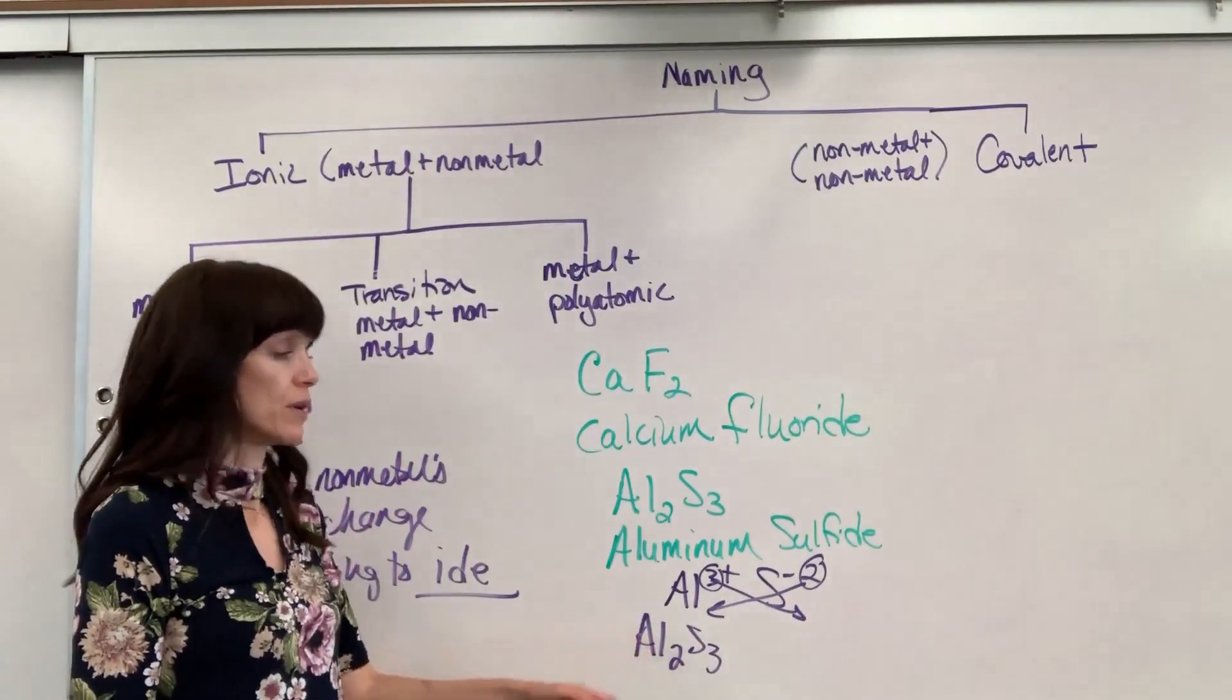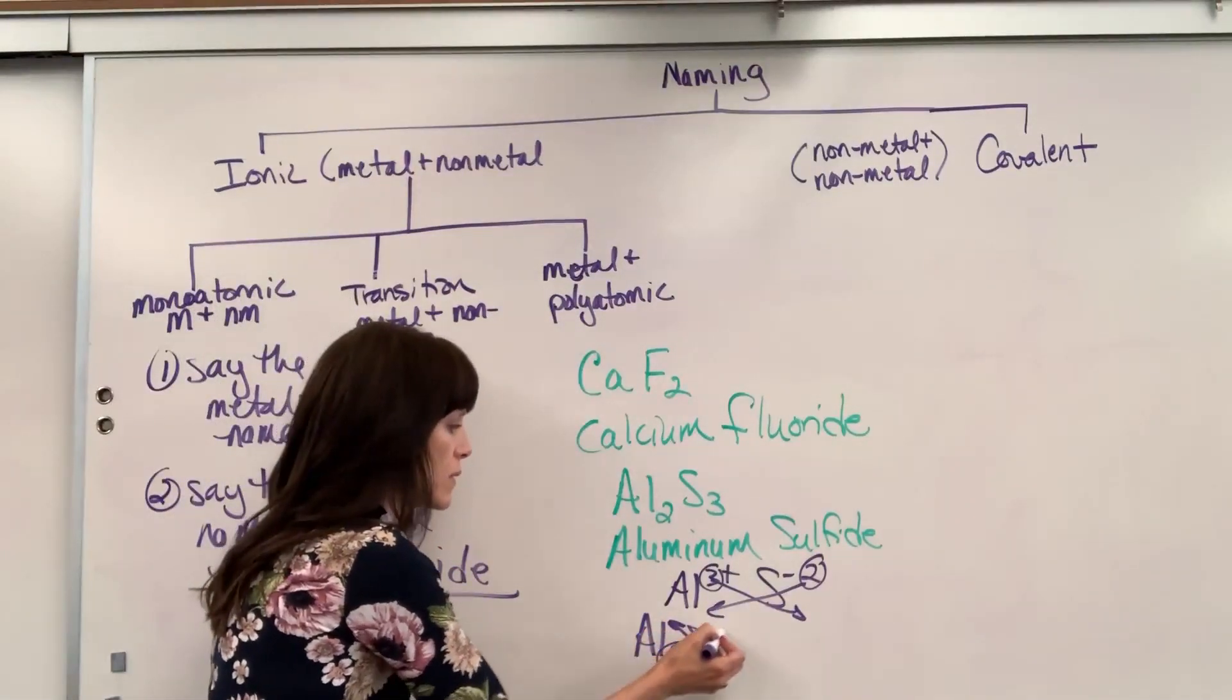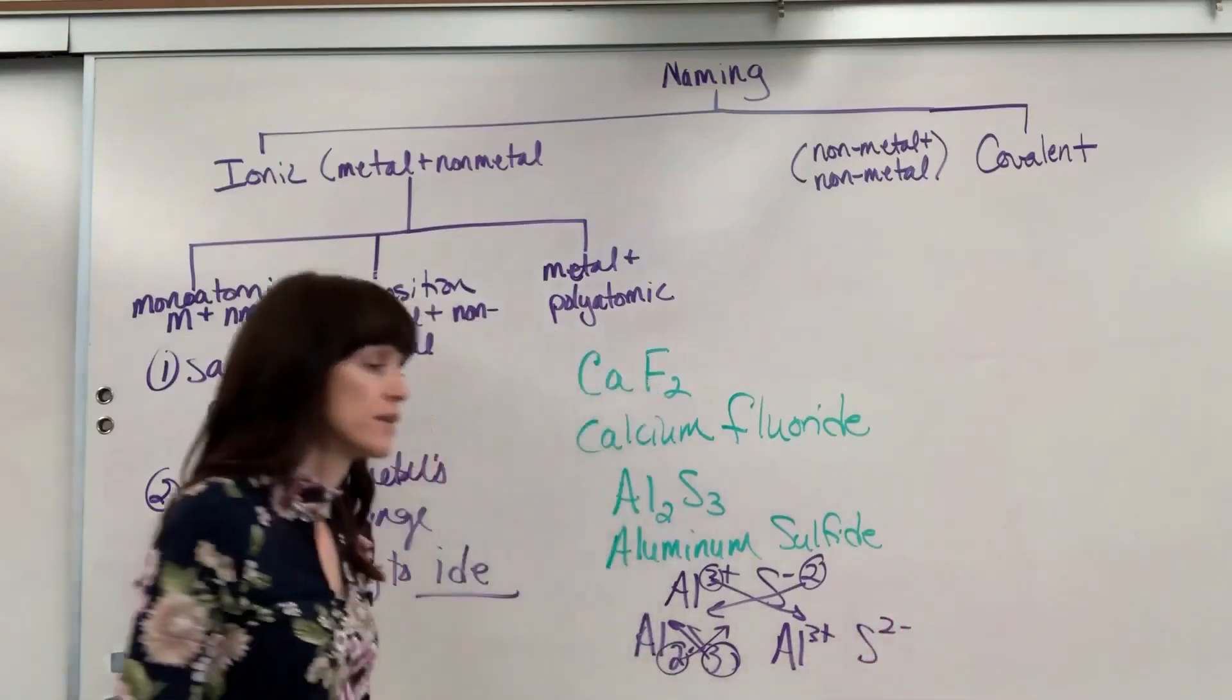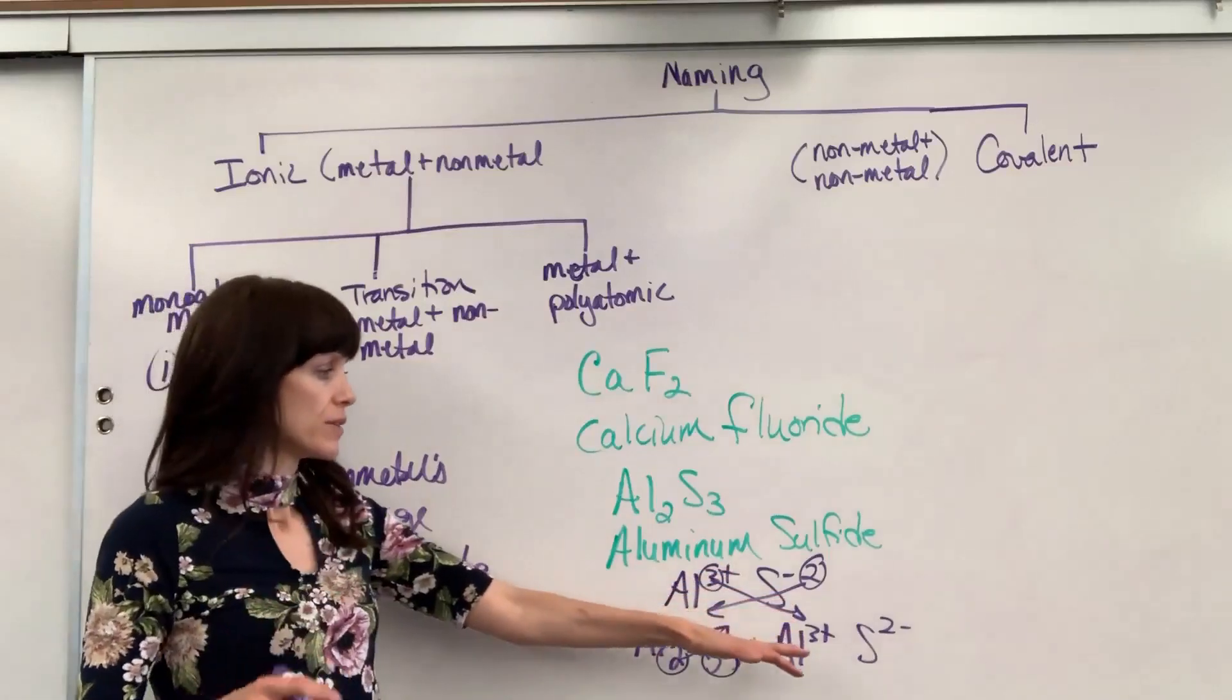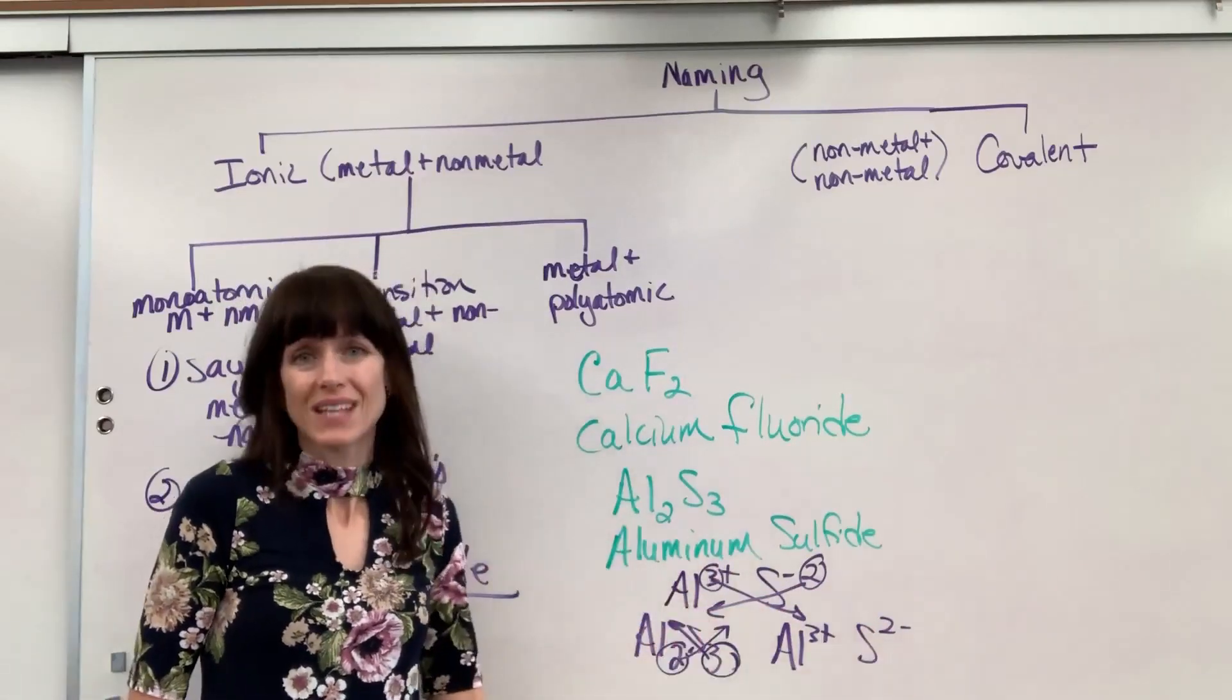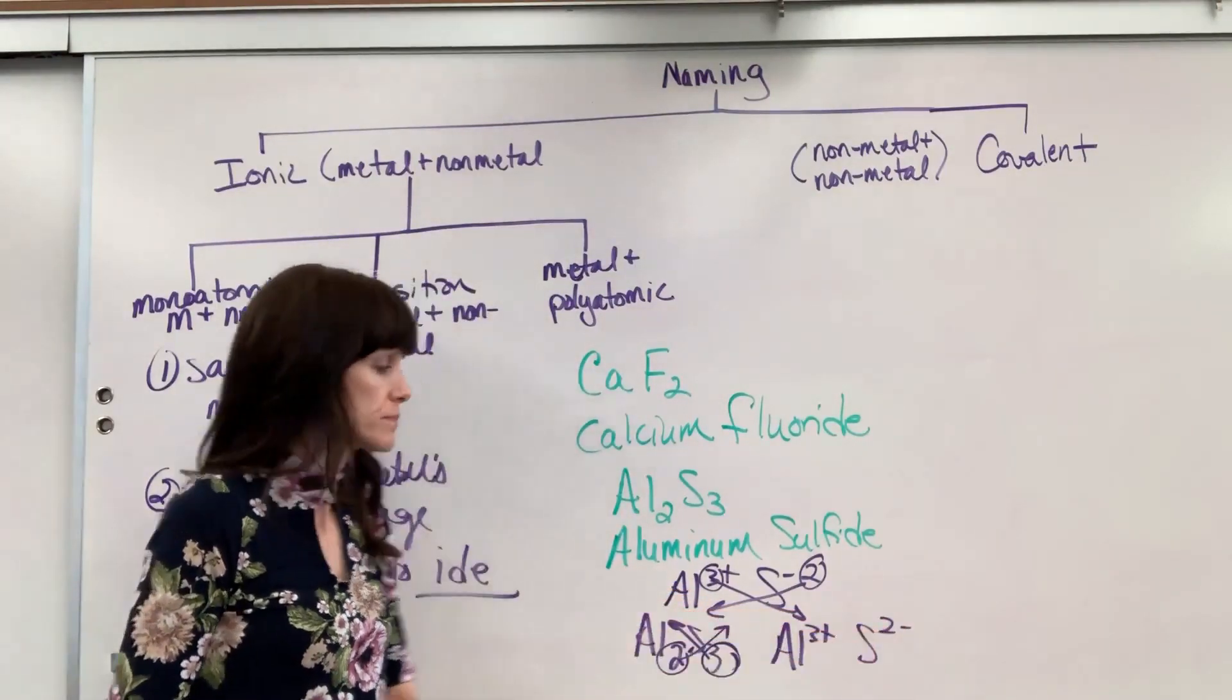There is your aluminum sulfide. If you wanted to know the original charges, what the original ions were, all you do is cross those numbers back up. So 3 was originally on the aluminum and 2 was originally on the sulfide. This shows us, as a reminder, metals are always written first and they're always cations, the positive ones. The non-metal is always written second and it's the anion - the one that gained electrons and has the negative charge.